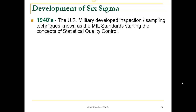Now let's talk a little bit about the development of Six Sigma and the directions that led to it. In the 1940s, during World War II, the U.S. military was struggling with getting good quality materials, and they developed an inspection sampling technique which became known as the MIL Standards. They don't exist anymore — they've been basically transformed into the ANSI Standards — and this is where the concept of statistical quality control arose.